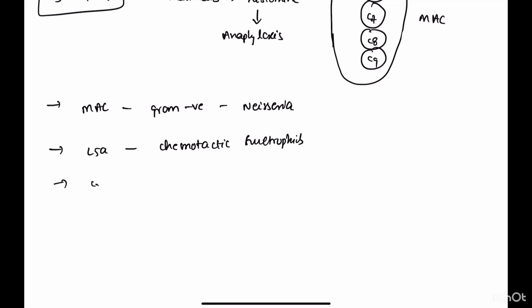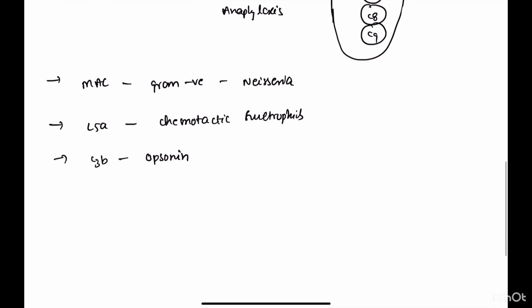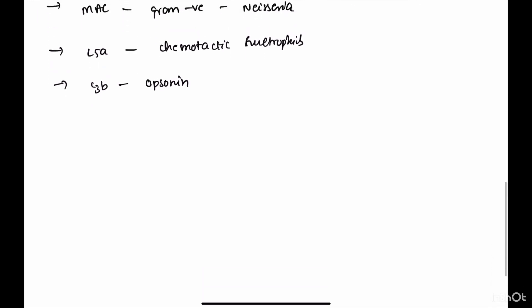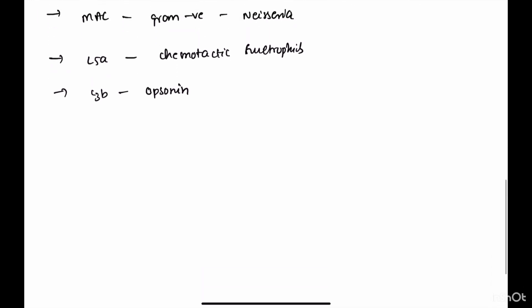C3b acts as an opsonin. Opsonins are molecules which attract macrophages to enhance phagocytosis. Along with C3b, IgG also acts as a primary opsonin.